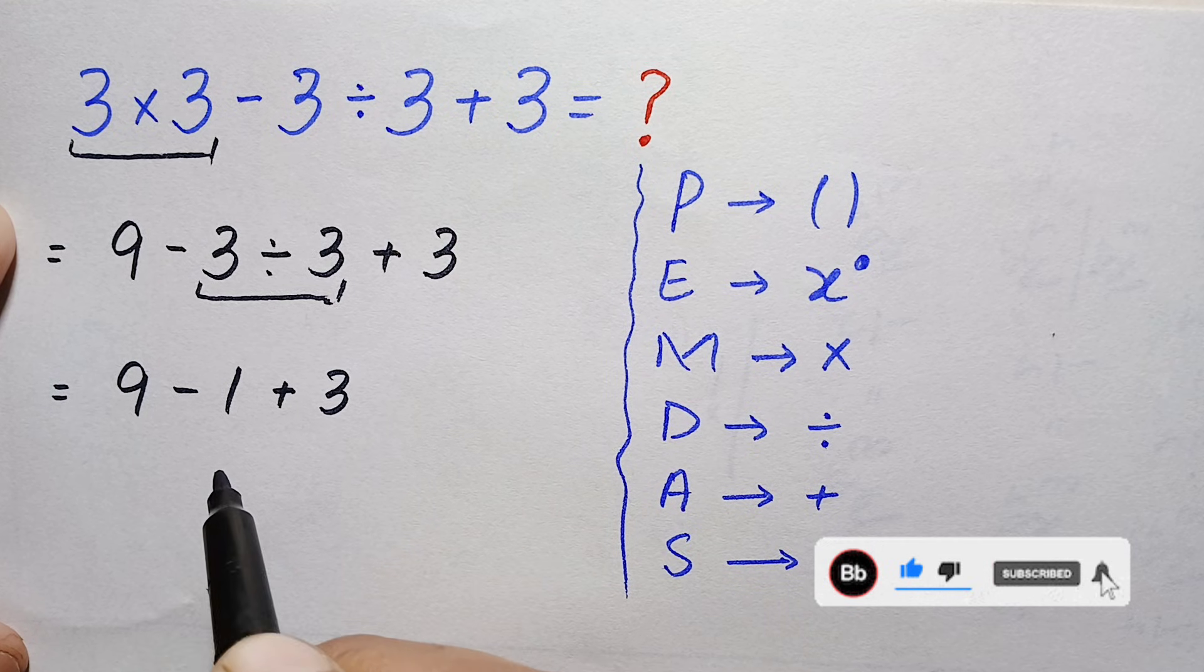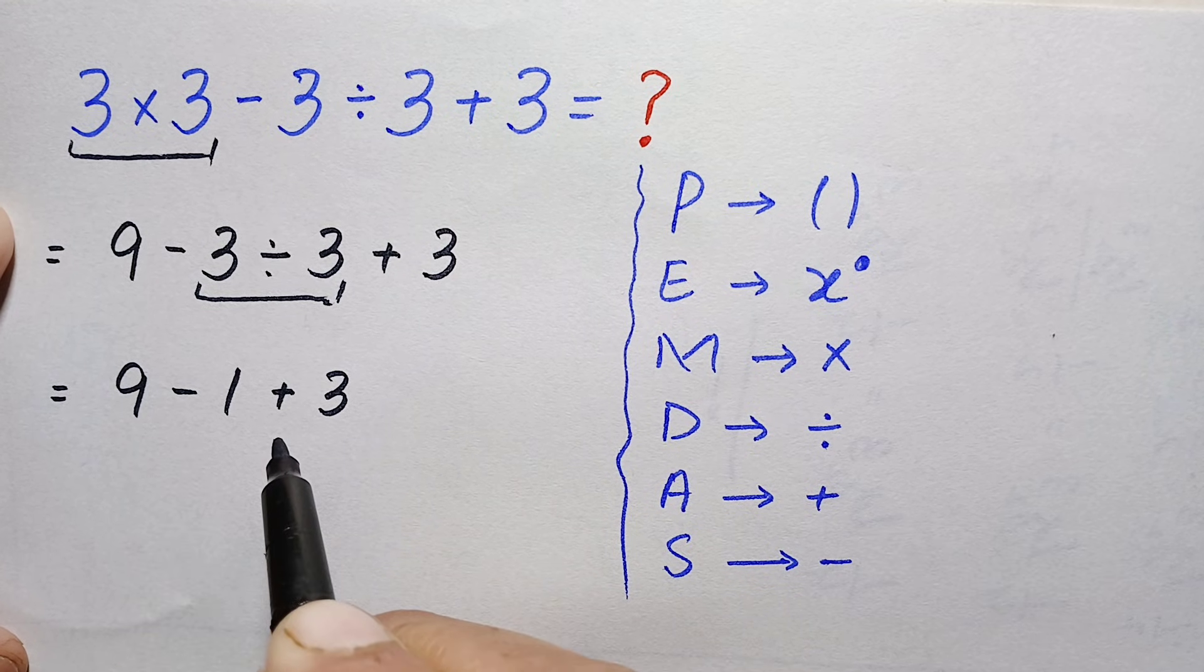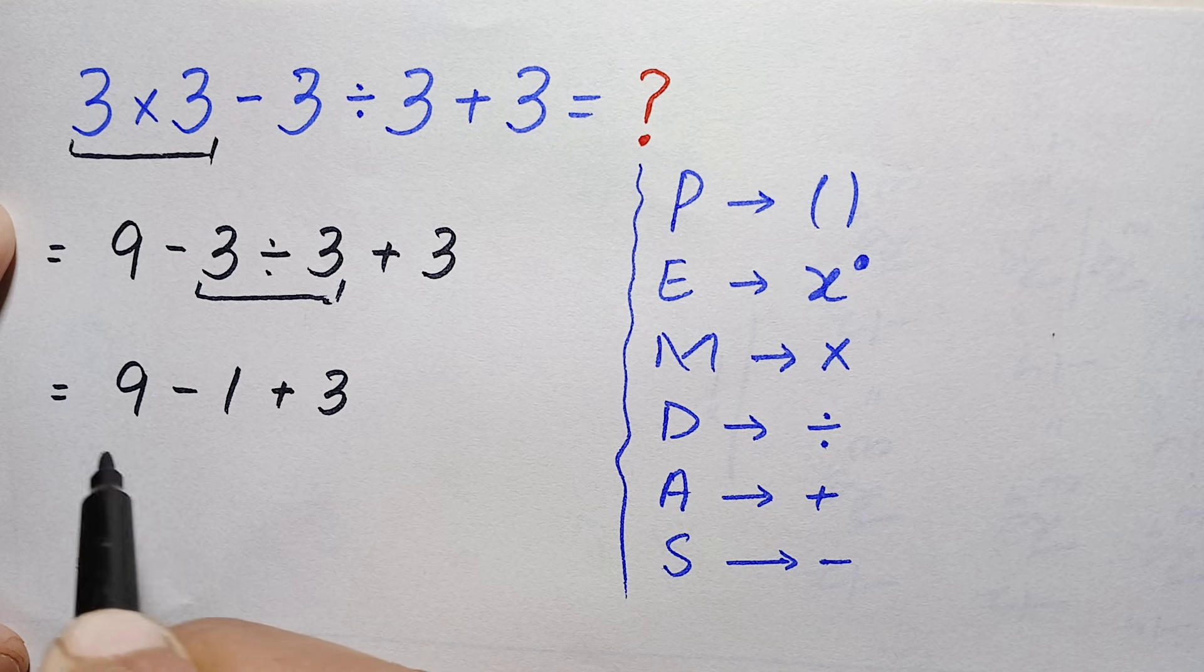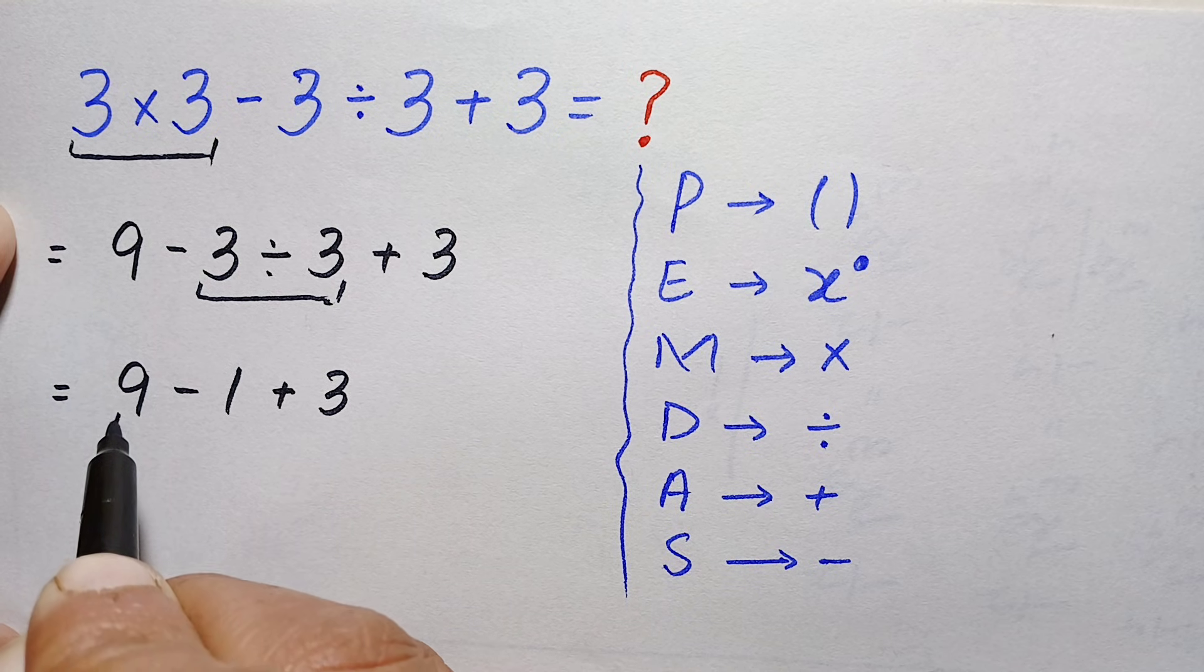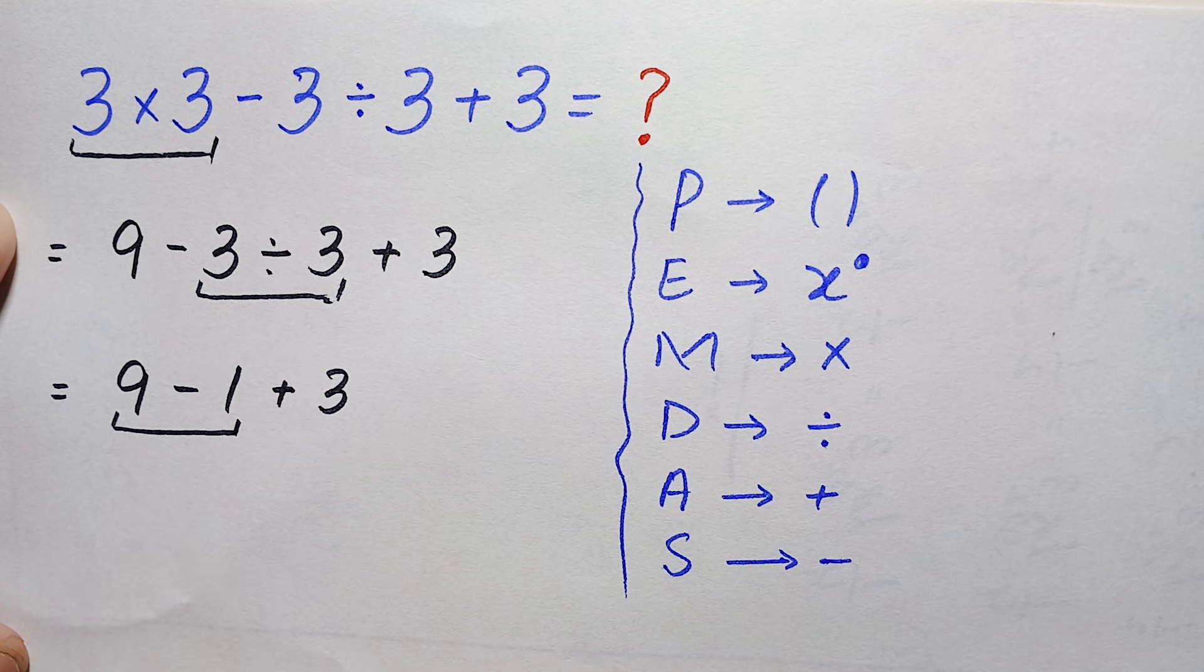Here we have two operations: subtraction and addition. They have the same priority of precedence from left to right. So first we will do this subtraction because it's on the left side.